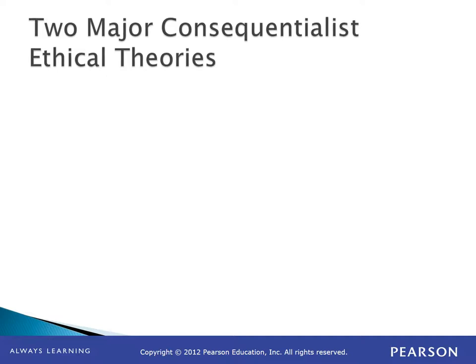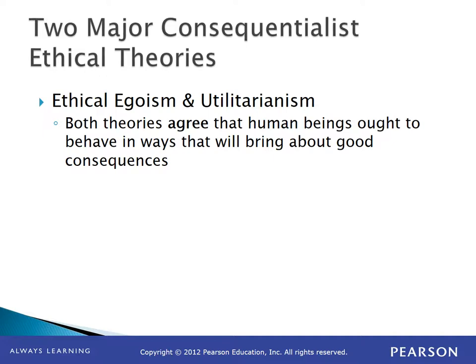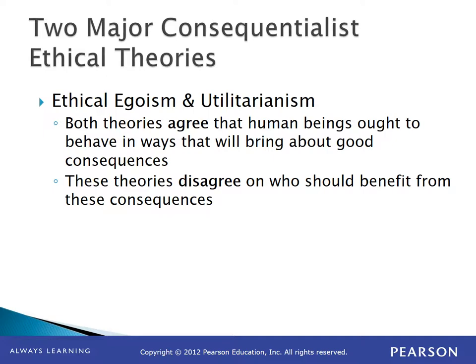In this chapter we'll look at two major consequentialist ethical theories. Both agree that human beings ought to behave in ways that bring about good consequences. You might ask: good consequences for whom? That brings you to the difference between the two theories — they disagree as to who should benefit. Egoethicists believe we should act in our self-interest: if it benefits us, it's good; if it does not, it is bad. Right and wrong are determined individualistically.